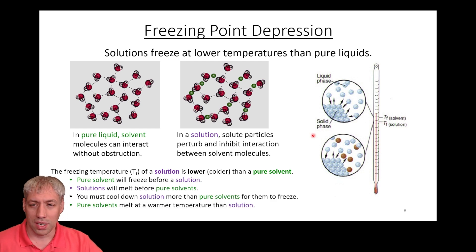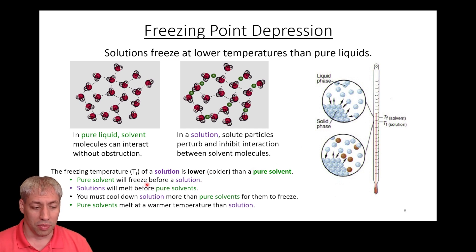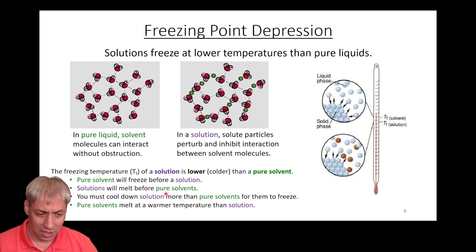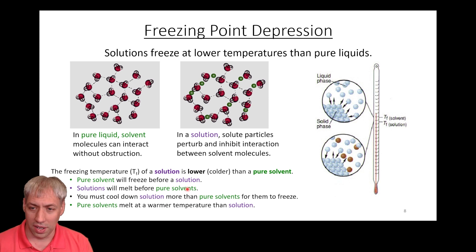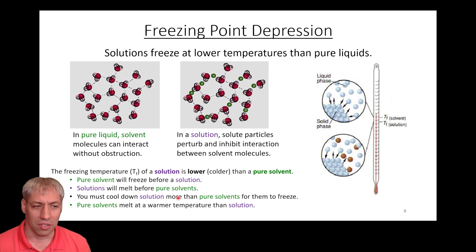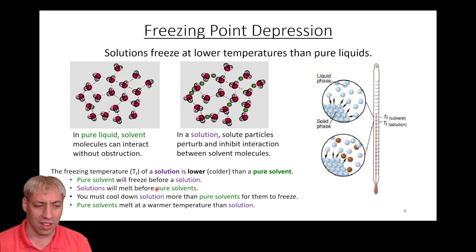The language can get complex here because you're talking about lowering the freezing temperature — making it colder. A pure solvent will freeze before a solution because the solution has to get colder to freeze. Solutions will also melt before pure solvents, which is why you put salt on roads — you want that ice to melt so it's not slippery. You must cool down the solution more than pure solvents for them to freeze, and pure solvents melt at warmer temperatures than solutions. All of these statements say the same thing: as you add solute particles, you lower the freezing point.